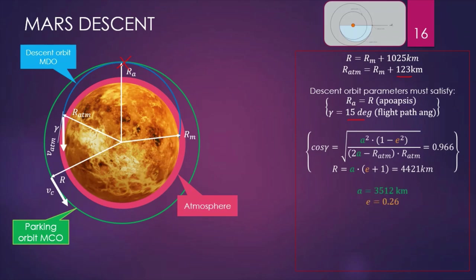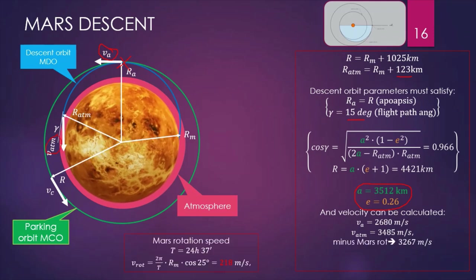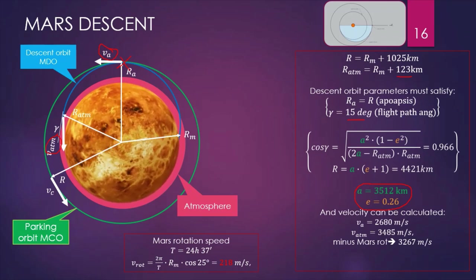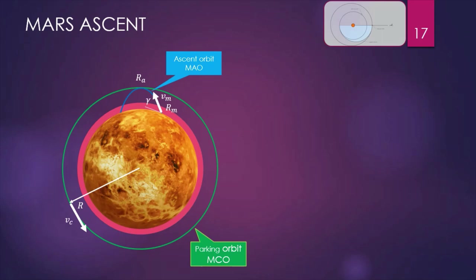By means of those conditions, we can determine the two parameters A and E of the elliptical descent trajectory, and also the velocity at the apoapsis and the velocity when entering the atmosphere. We need to consider that Mars also has its own rotation, so we reduce the velocity by 218 m/s and come to 3,267 m/s. But as we are entering the atmosphere, we have the drag effect — the drag is dissipating 90% of the velocity, and at the end only 327 m/s remains at impact. To eliminate this, we need to open the parachute or burn our rockets for a while.